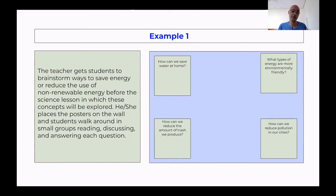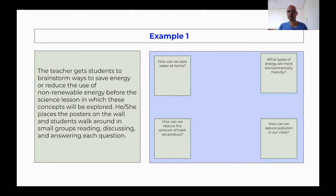The teacher places the posters on the wall and asks students to walk around in small groups, reading, discussing and answering each question. The first question is: how can we save water at home? Then rotating counterclockwise, the second is: how can we reduce the amount of trash? The third is: how can we reduce pollution in our cities? And the fourth: what types of energy are more environmentally friendly? Group one starts at station one, group two at station two, group three at station three, group four at station four.